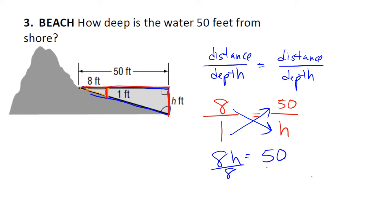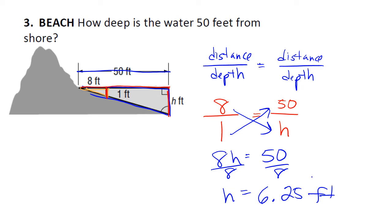When we divide both sides by 8, h equals 6.25 feet. So when we are 50 feet away from shore, the depth is 6 and a quarter feet.